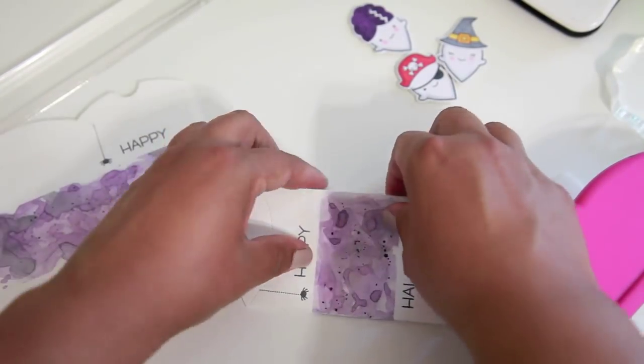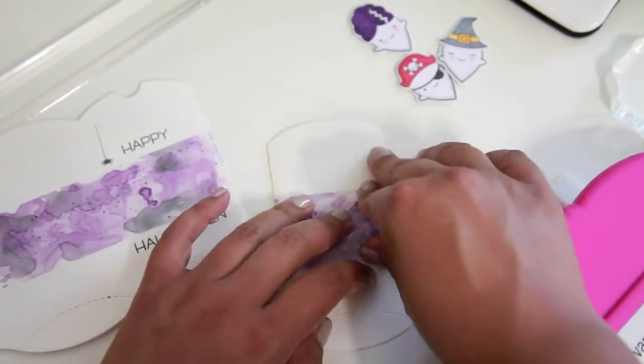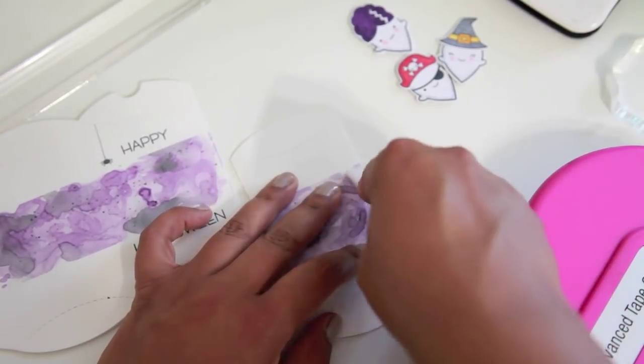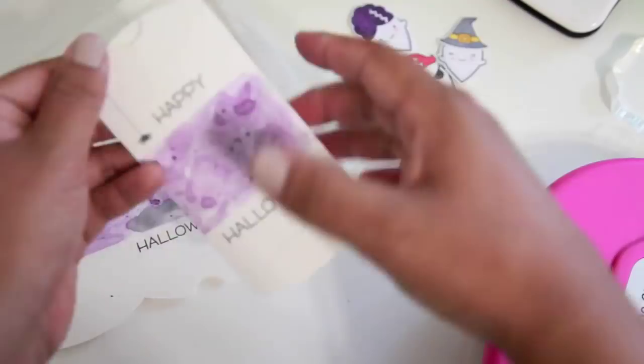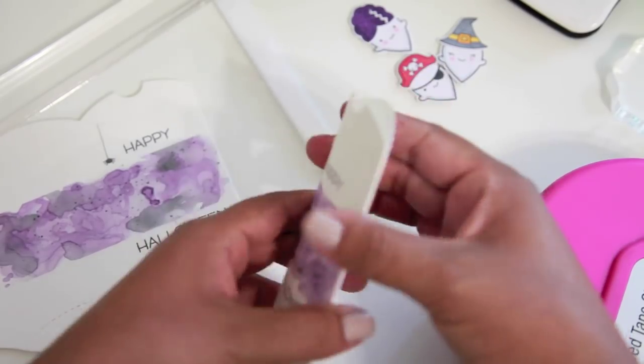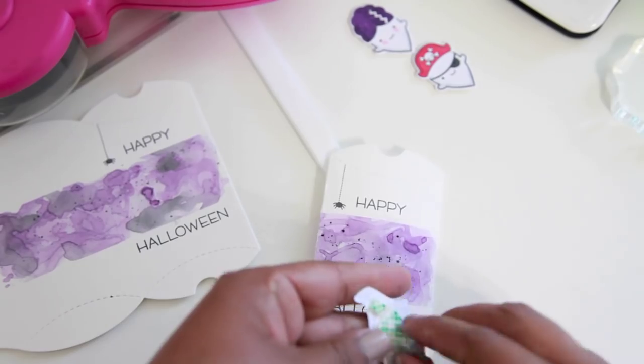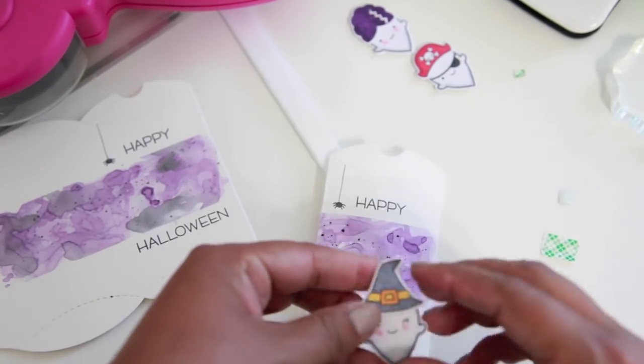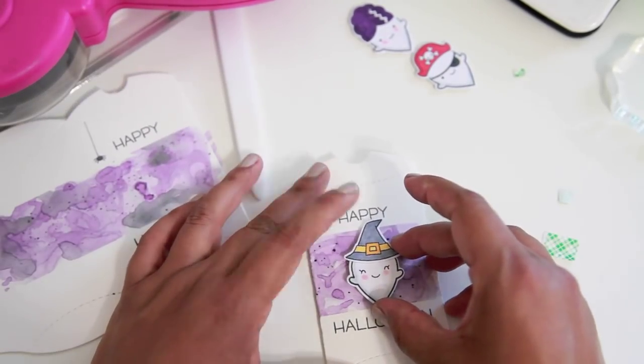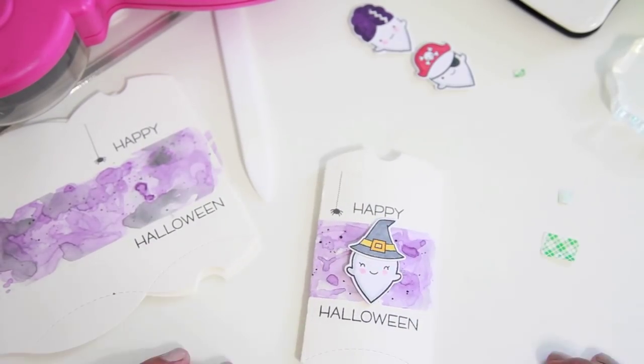So I'm using my ATG gun here. And the type of adhesive that I have in this ATG gun is actually like a really strong permanent adhesive. So I would definitely recommend that, especially for a watercolor paper such as this that's really thick. You would need something that's really strong.